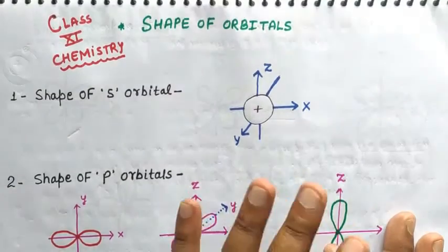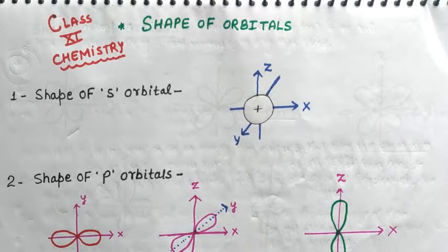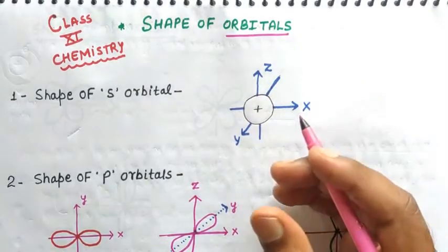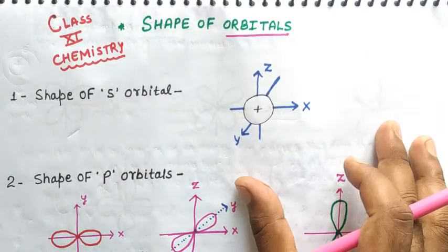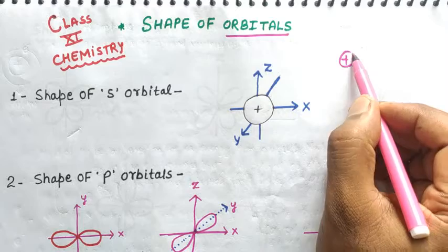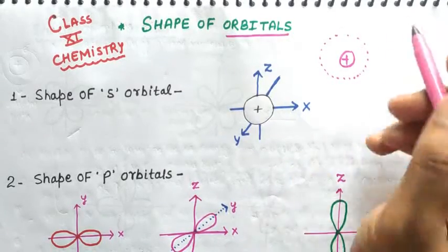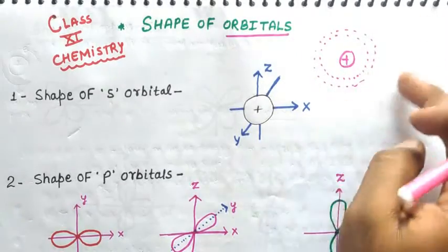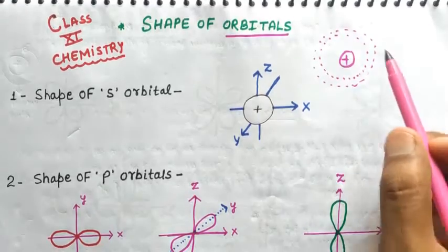As I discussed in previous videos, there are different shapes of orbitals. Today we will understand how the shapes of orbitals occur and how we have to study them. First of all, we have to understand what an orbital is. An orbital is the three-dimensional region around the nucleus where there is a maximum probability of finding an electron of definite energy - a 3D region around the nucleus where there is a probability of finding an electron.